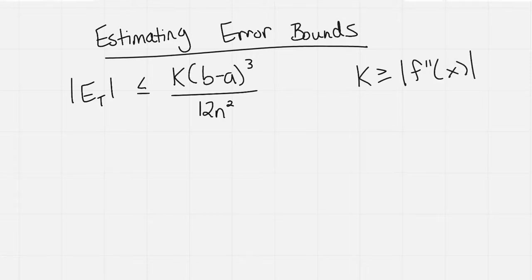And we were using all this on the integral 4 to 6 of natural log of x cubed plus 2 dx. So our f of x would be that natural log of x cubed plus 2, and our a and b are 4 and 6, respectively.